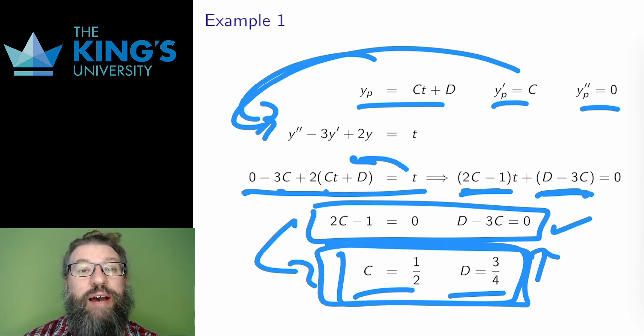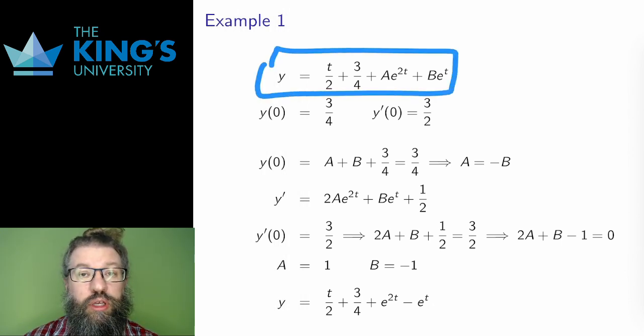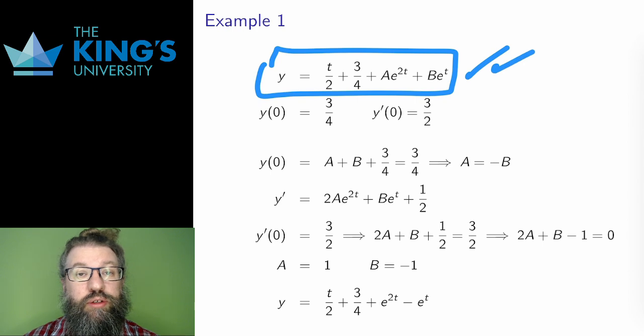So now I have the particular solution and the homogeneous solution. I put them together for the full solution. Now I can return to the initial conditions. I still have a and b as unknowns. These were the pieces of the homogeneous solution.